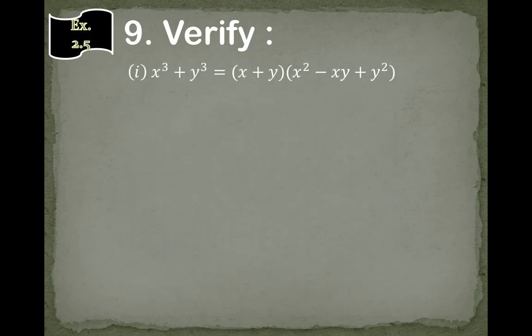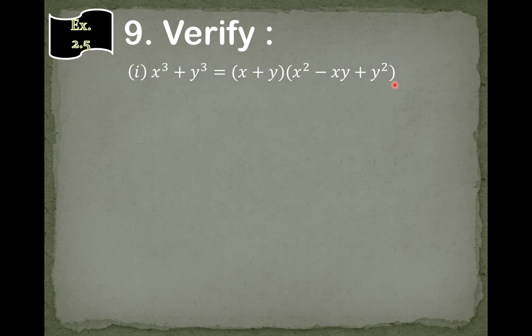Our first question is: x cube plus y cube is equal to x plus y whole bracket multiplied by x square minus x y plus y square whole bracket. So now we multiply x plus y by x square minus x y plus y square to find out whether the answer is x cube plus y cube.